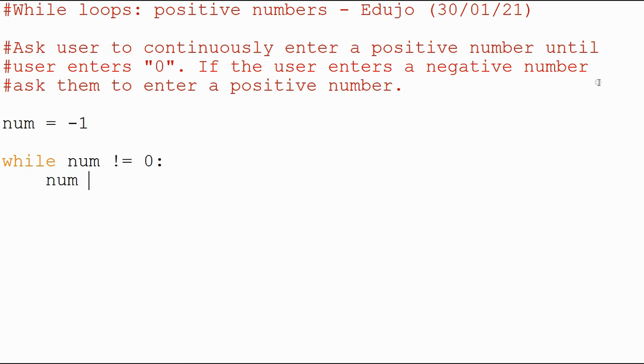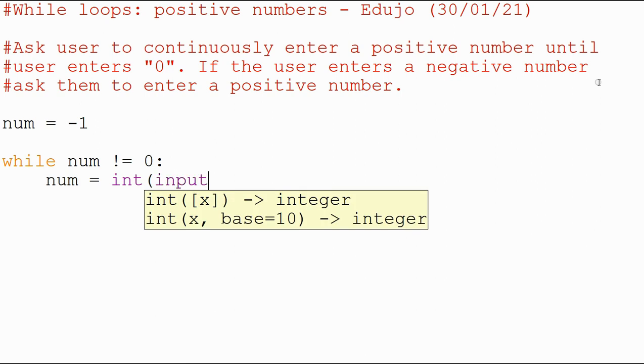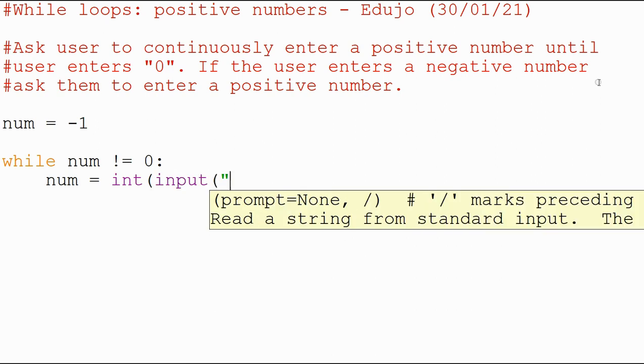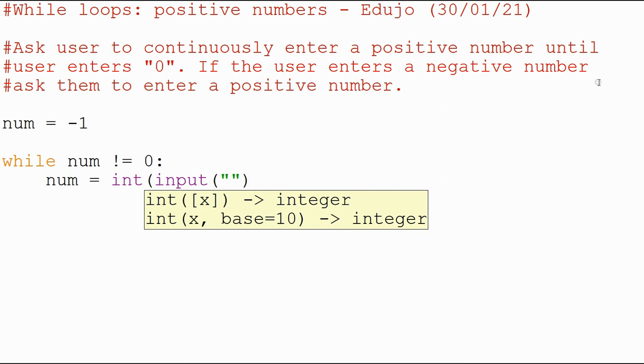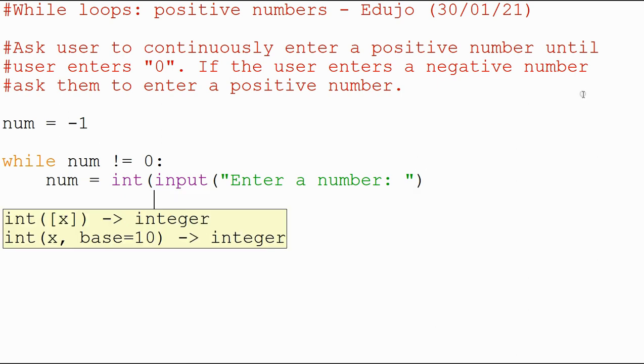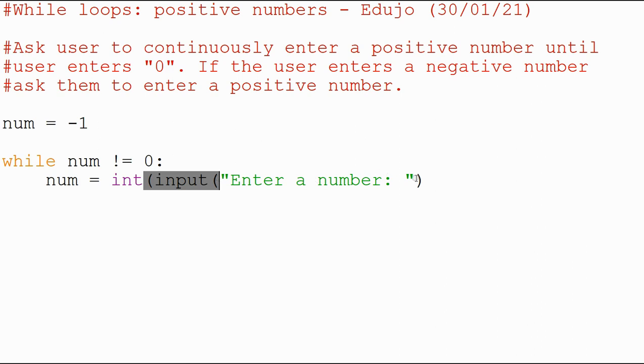going to look at comparing integers, so we do need to have an integer. So int input, and we're going to have 'enter a number'—we put a little space there to make it look nice. There we go, there's a common error: I started with two opening brackets but didn't close it with two closing brackets. Let me just do that, and now our cursor jumps to the correct position.